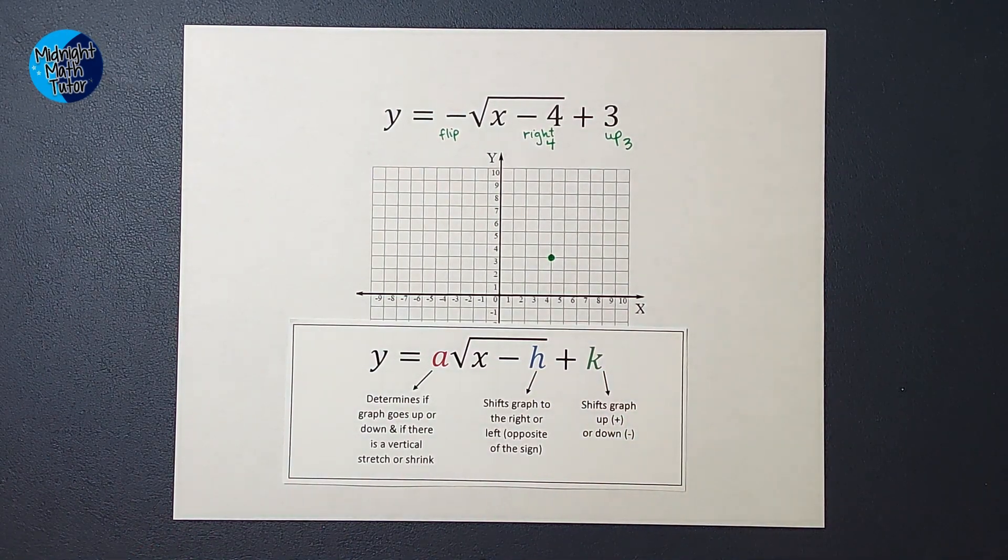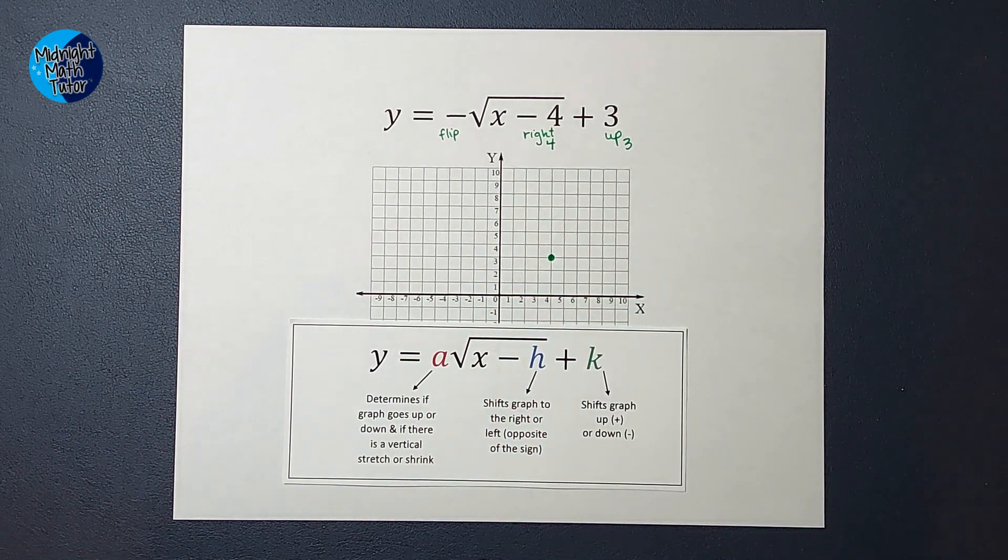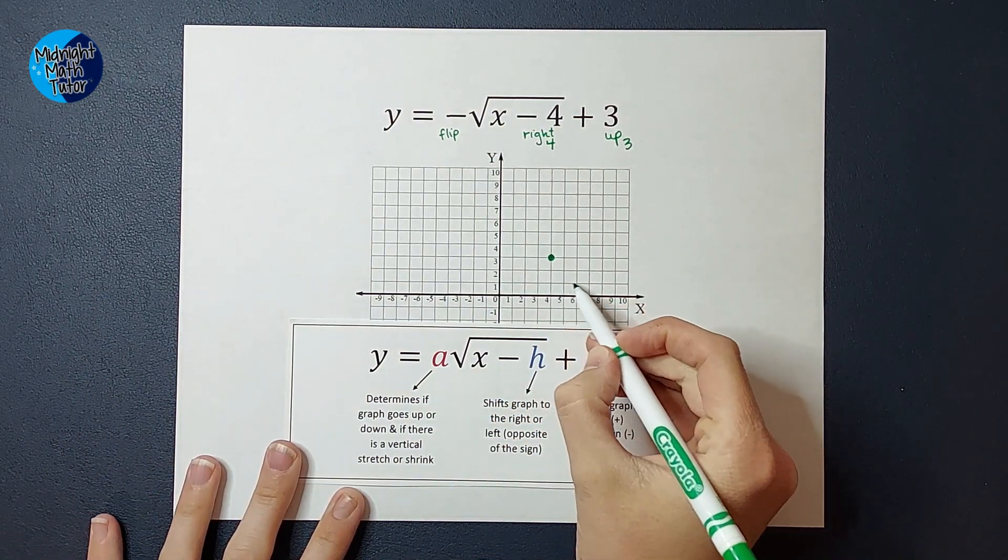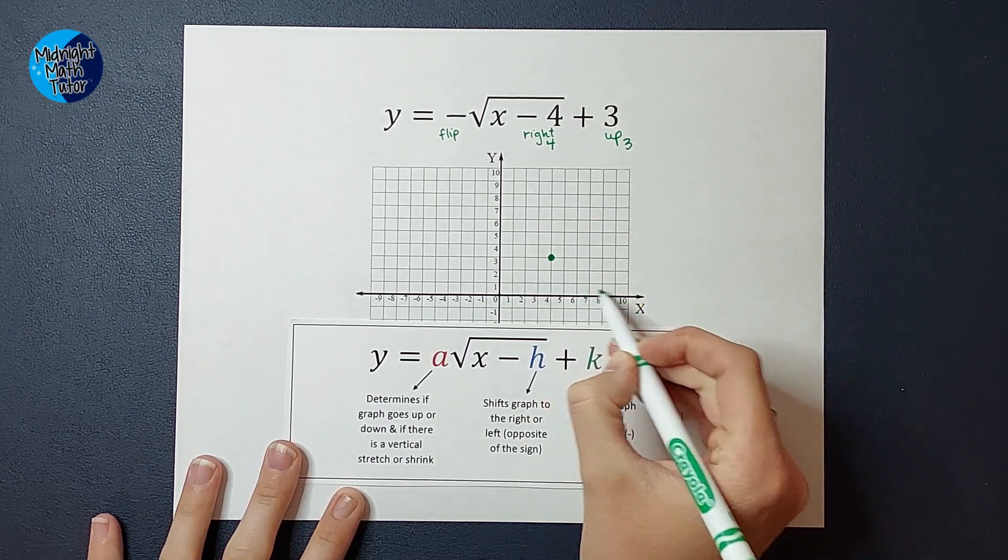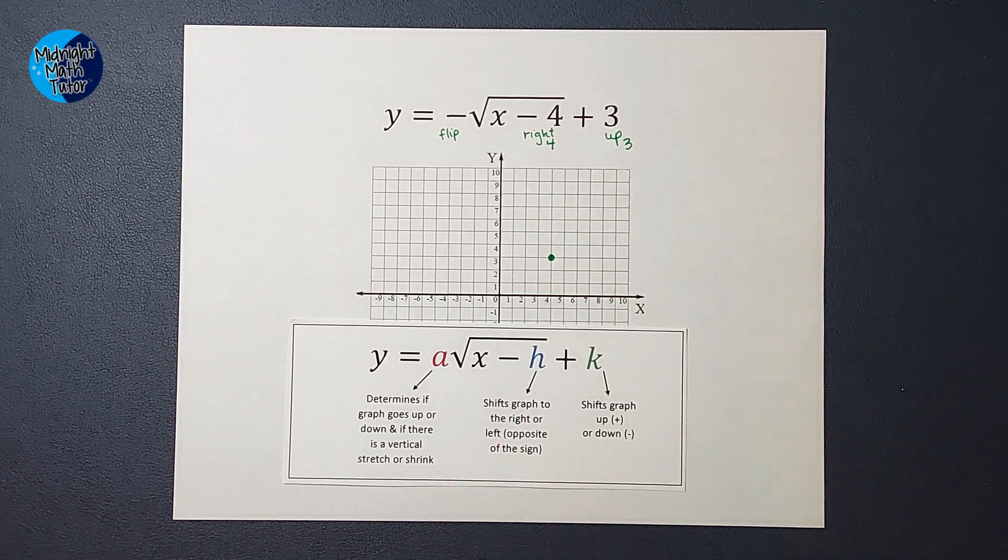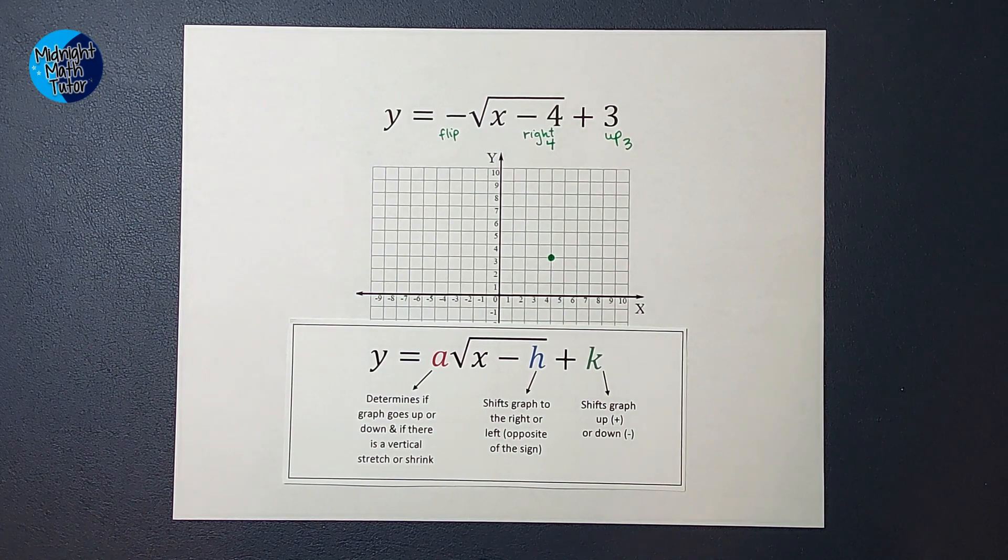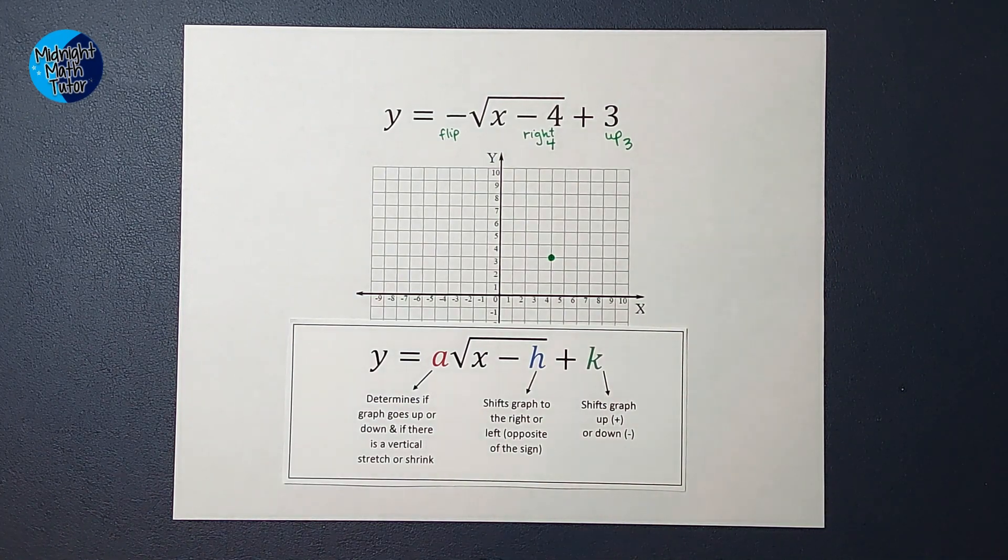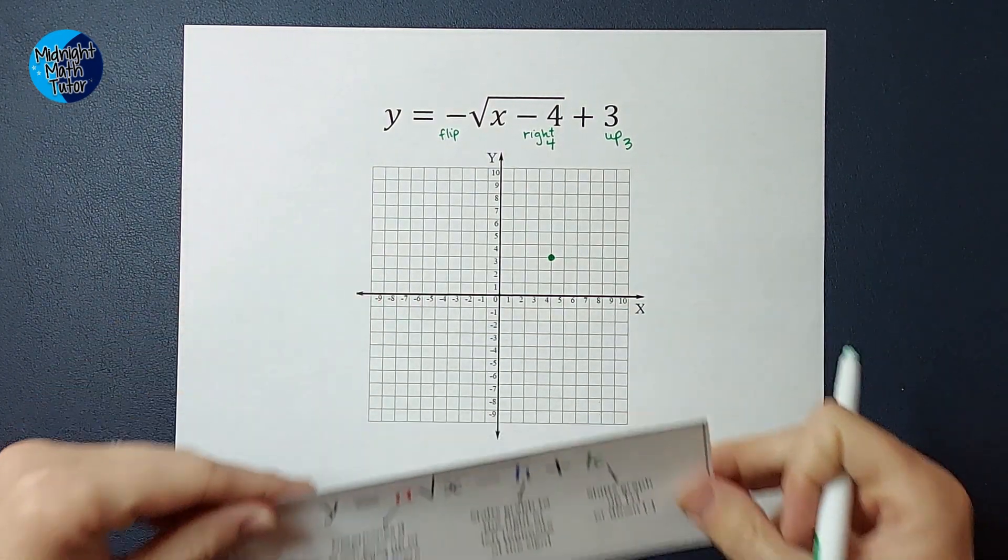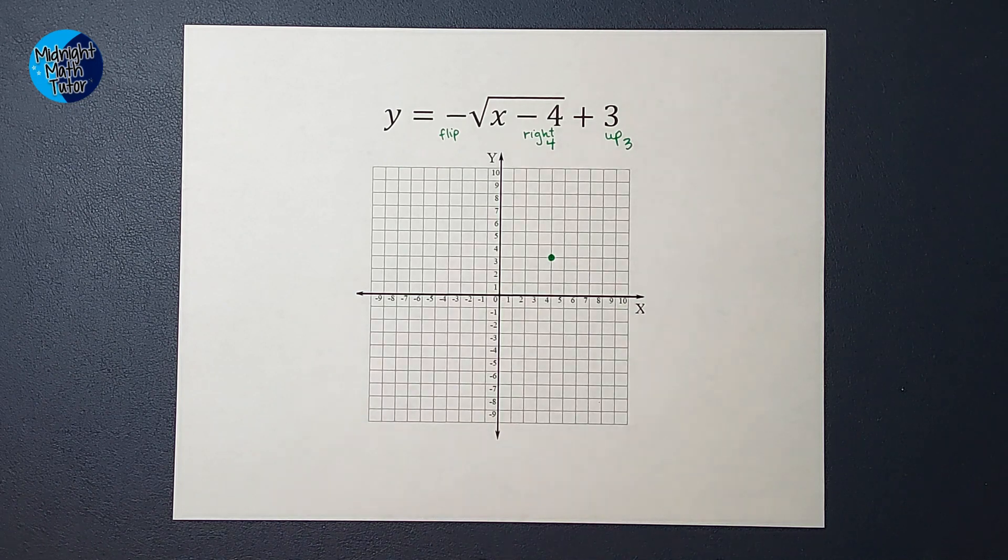Now, some teachers at this point, they might just want to know that you know where the new starting point is, and you know that it's flipped and goes over that way. They just want you to draw it as a good approximation, and you're done. If that's the case, if that's all your teacher wants, draw that line. You're good. Like this video if it helped you, and come back to it if you need more later. But some teachers might want you to graph a couple other points to give you a better idea of the shape of this graph. So if that is the case, we're going to plug in a couple points now.